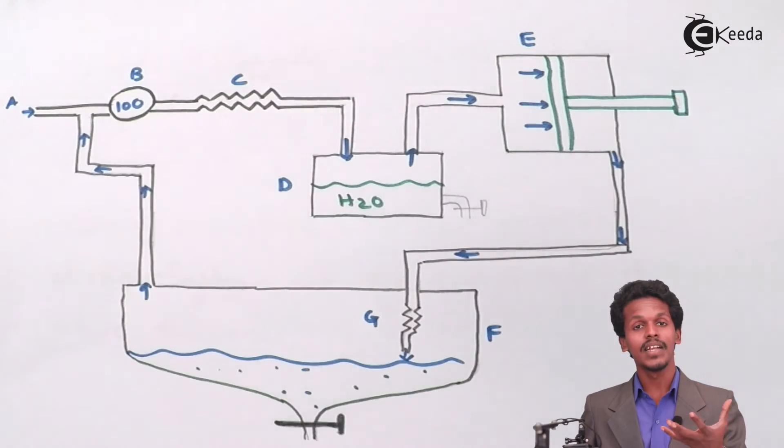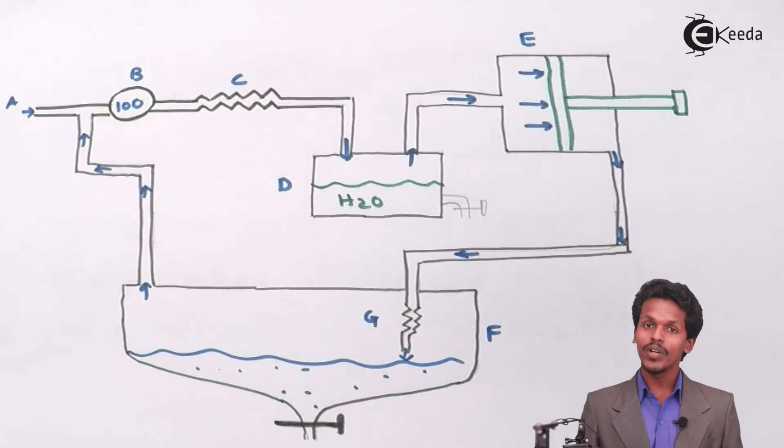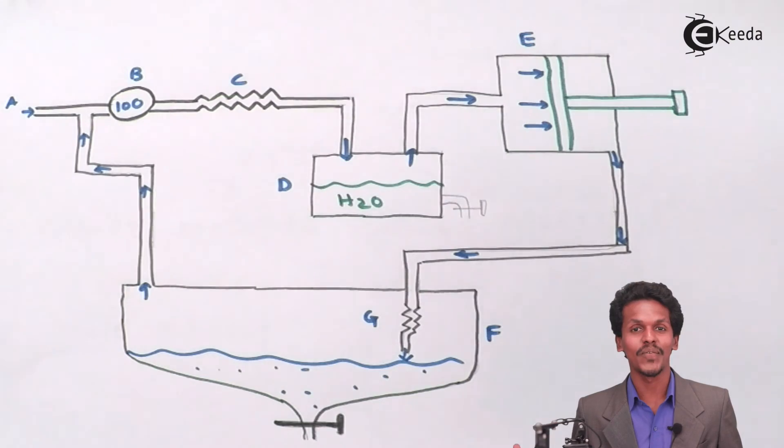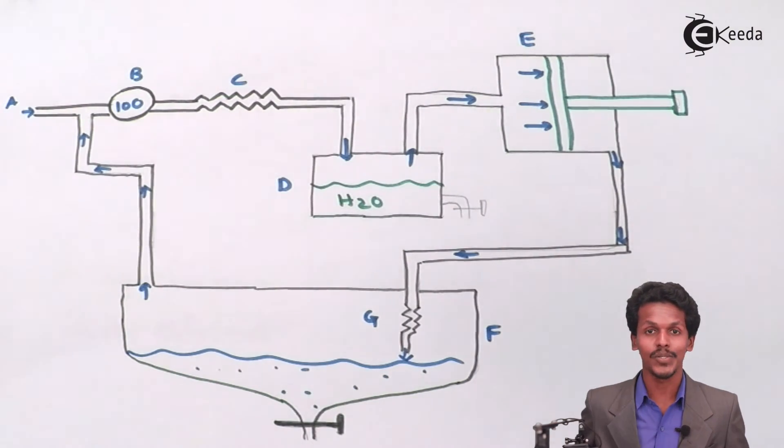And this overall process is basically done in an adiabatic process. So the gas or the air would get cooled up in this region. And we could liquefy the particular air. So this was the modification of Linde-Claude's process of liquefaction of air. I hope you have understood this concept very clearly.